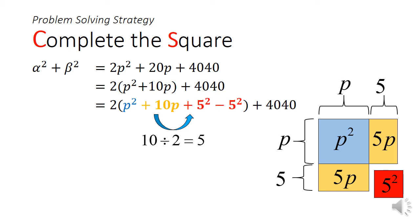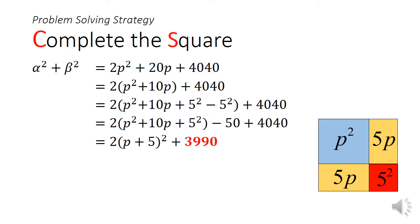This is why we need to add 5 square inside the bracket and immediately subtract it to balance this expression. With a little bit more algebraic manipulation, we can express this as 2 times p plus 5 squared plus 3990.